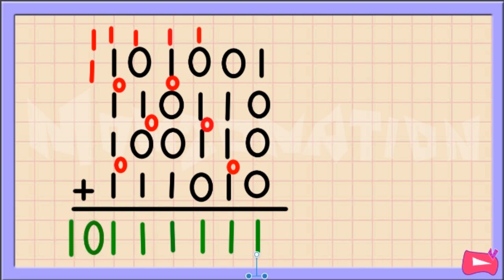Always remember to add two digits at a time to keep it simple. Also, always work on one column at a time. Now, to check the work, let's convert each binary number into a decimal number.